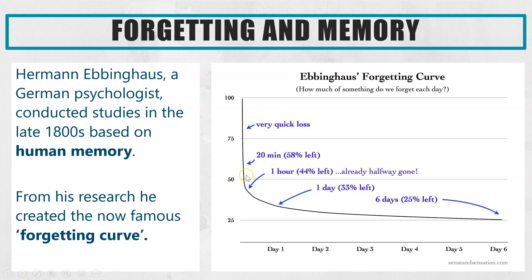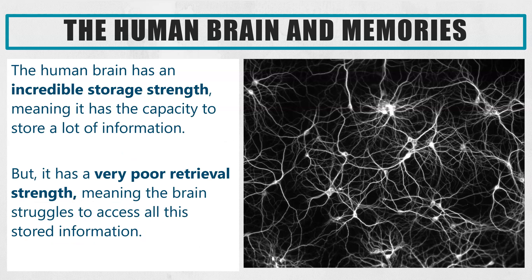He studied human memory, looking at how quickly you forget something if you don't think about it. If you learn something at school, on that first day you go from 100% memory when you've just been told the fact, to within the space of an hour you only have about 44% of that memory left. Jump ahead to six days later and you barely remember it at all. If you're studying your GCSEs or A Levels, being told lots of new information every day with your exam two years later, that is not good.